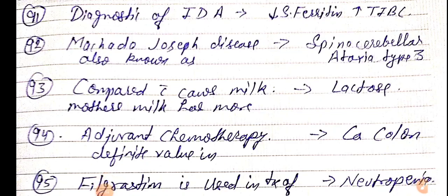Good morning doctors, welcome again. Today we are going to discuss NEET PG 2021 important one-liners, this is Part 10. Diagnostic of IDA — iron deficiency anemia — is mainly by decreased serum ferritin, increased TIBC (total iron binding capacity) or transferrin saturation. The best marker for iron deficiency anemia is serum ferritin.